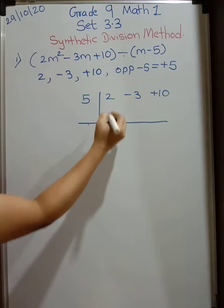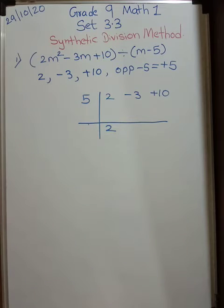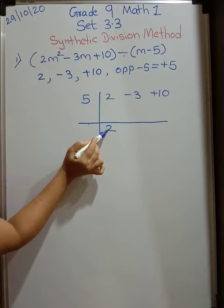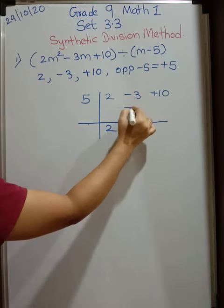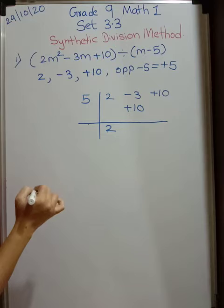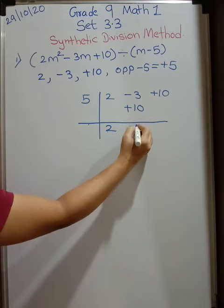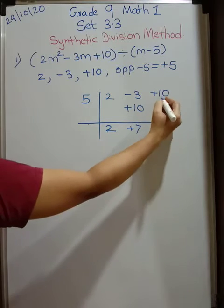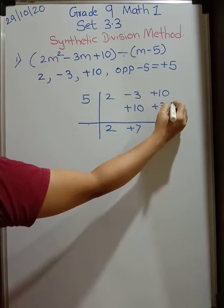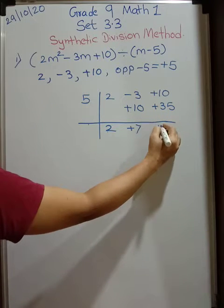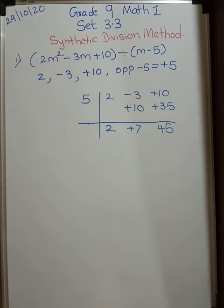Now after that this 2 as it is you will take it down. Whatever sign is there you will write it there. Now multiply 5 into 2. 5 into 2 and write it over here. 5 2's are 10. So that is plus 10. Now carry out this addition and subtraction. 10 minus 3 is plus 7. Again carry out this multiplication. 7 5's are 35. So write here plus 35. Carry out addition, subtraction whatever it is. What you will get? 45. Now there is nothing to perform ahead. So stop.